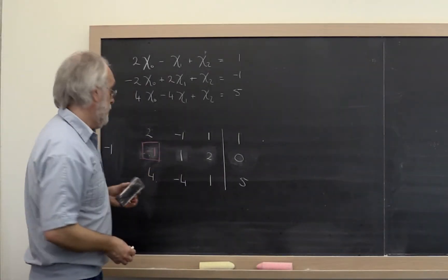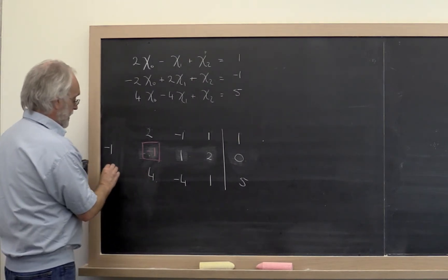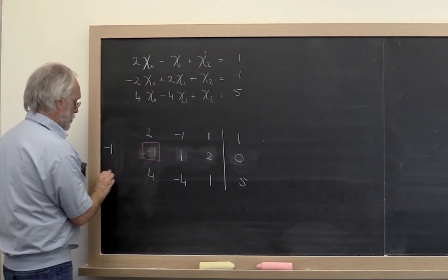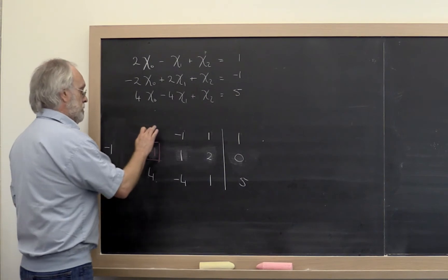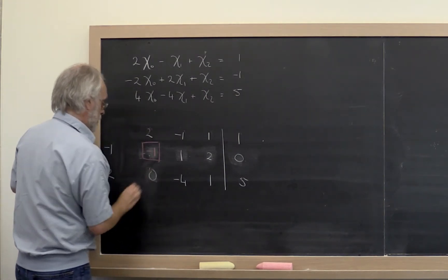So what did you do? You computed that the next multiplier was 2. And if you do 2 times 2 subtracted off a 4, you end up with a 0.